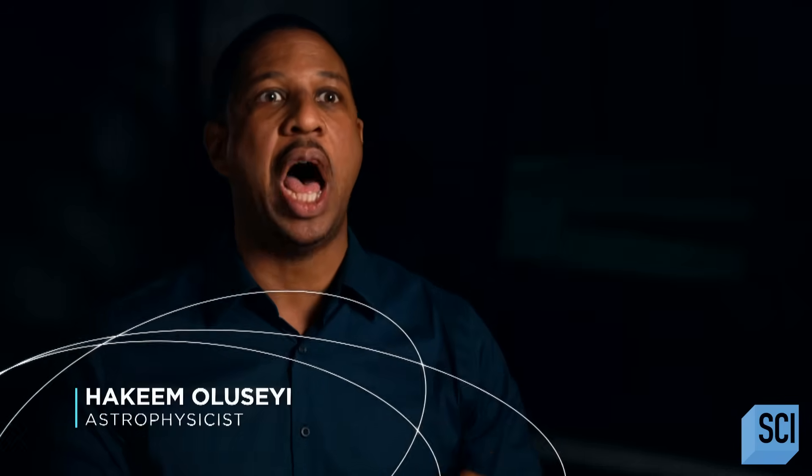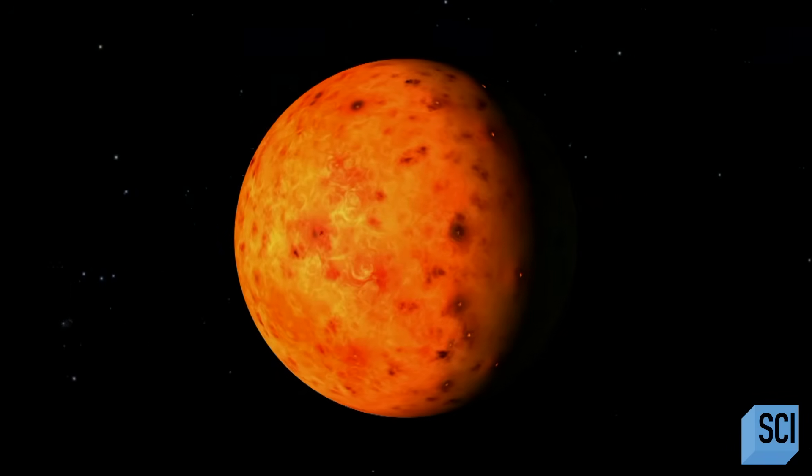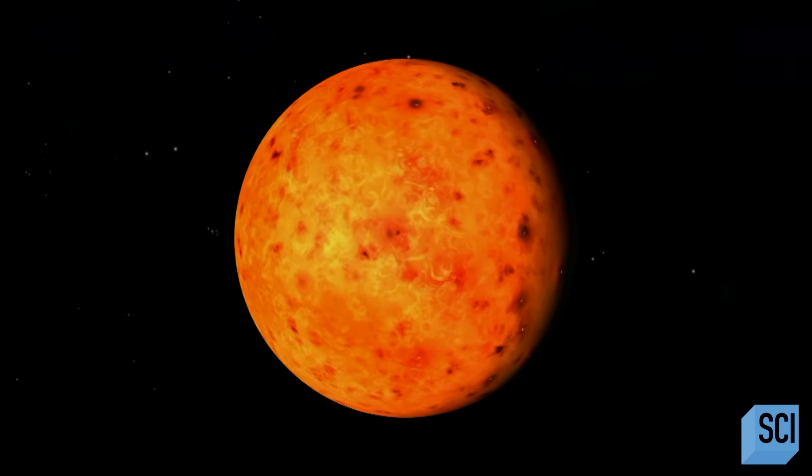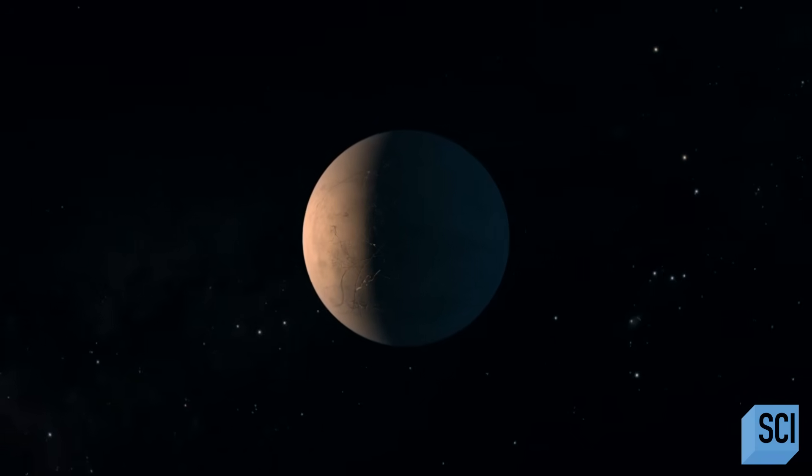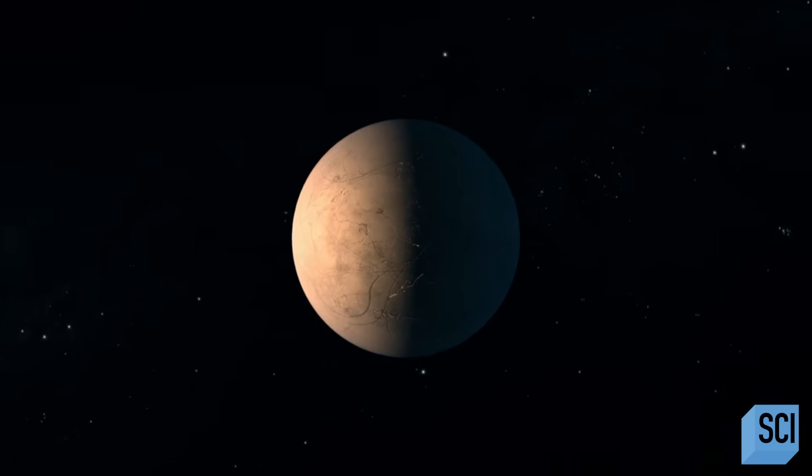When we look around the galaxy, we see that the most common type of terrestrial planet is what we call a super-Earth. The term super-Earth refers to a solid planet that is somewhere between three and five times the mass of the Earth. And amazingly, these are the most common types of planets in the universe.